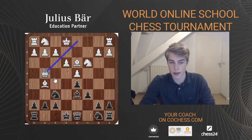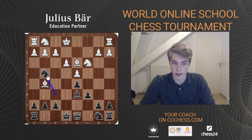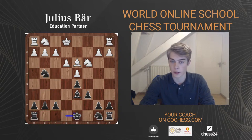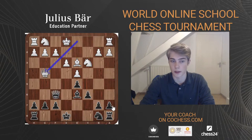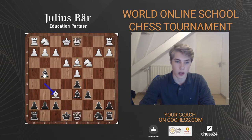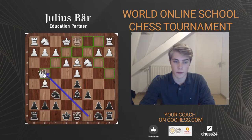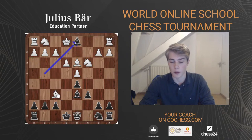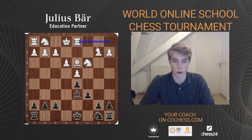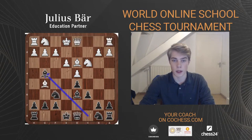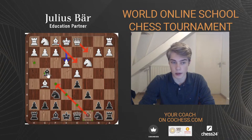We also cannot play Bg4 because it drops a piece. If you're watching the livestream, try to find the winning variation for White if Black plays Bg4 — it's a nice exercise. The answer: Bxf6, Qxf6, Qxg4 wins a piece. And after Bxf6, Bxd1, White plays Bxd8 and after Rxd1 Black is down a piece. So Bg4 simply loses a piece.